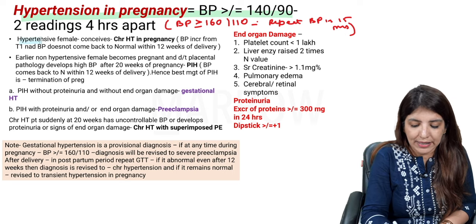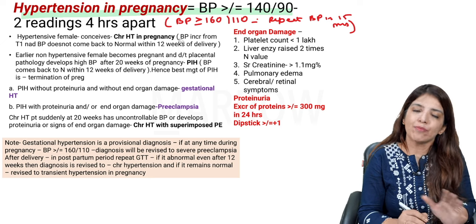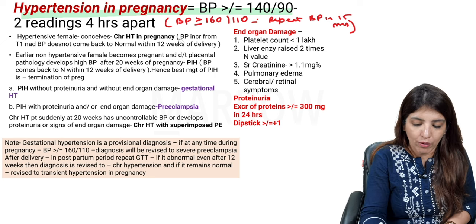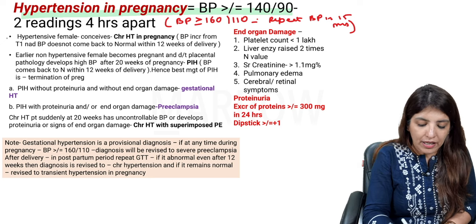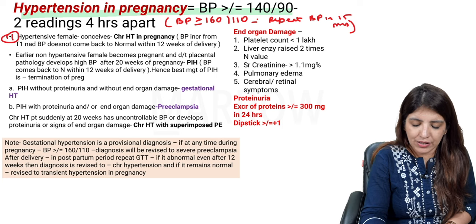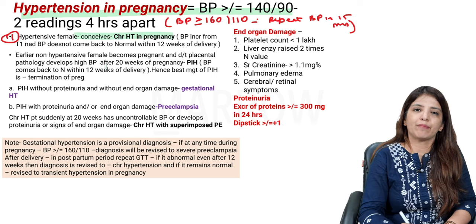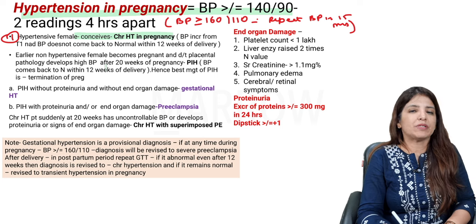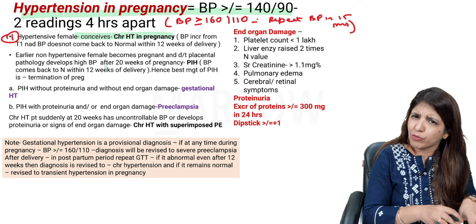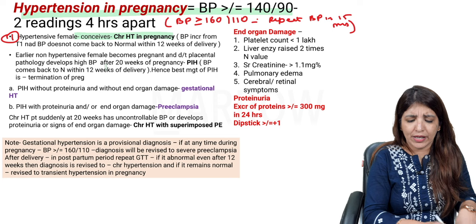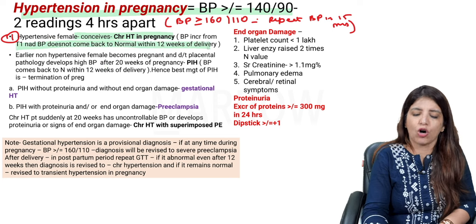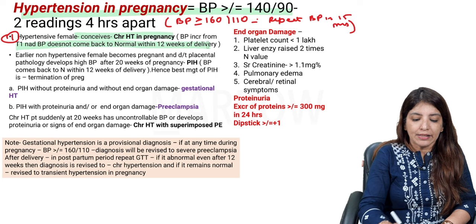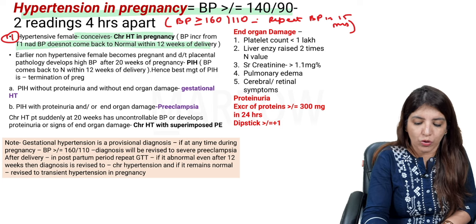Coming to the types of hypertensive females during pregnancy: number one, if a hypertensive female conceives, that is called chronic hypertension in pregnancy. The increase in BP will be seen from the first trimester, from the first day of pregnancy, and BP does not come back to normal within 12 weeks of delivery.